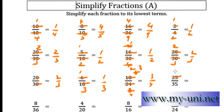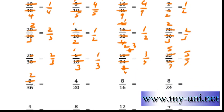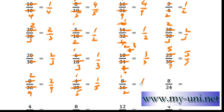5 times 5 is 25 and 5 times 7 is 35, so 5 over 7 is the answer. 4 times 2 is 8 and 4 times 9 is 36; 4 times 1 is 4 and 4 times 5 is 20, so 1 over 5 is the answer. Then 8 times 1 is 8 and 8 times 2 is 16, so 1 over 2 is the simplified form.